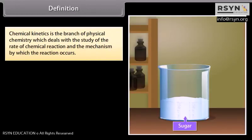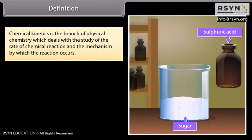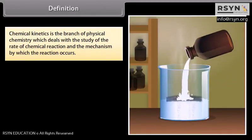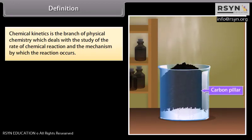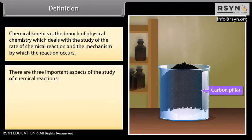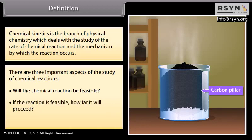Chemical kinetics is the branch of physical chemistry which deals with the study of the rate of chemical reaction and the mechanism by which the reactions occur. There are three important aspects of the study of chemical reactions: Will the chemical reaction be feasible? If the reaction is feasible, how far will it proceed? How fast a reaction would occur?